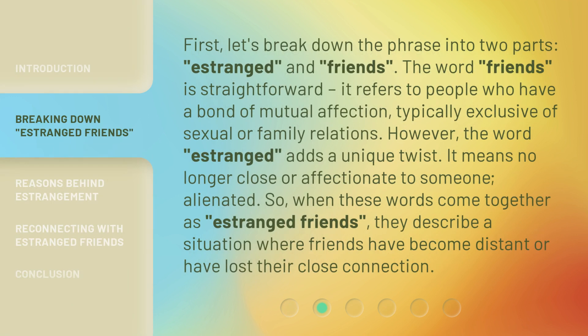First, let's break down the phrase into two parts: estranged and friends. The word friends is straightforward — it refers to people who have a bond of mutual affection, typically exclusive of sexual or family relations. However, the word estranged adds a unique twist. It means no longer close or affectionate to someone; alienated. So when these words come together as estranged friends, they describe a situation where friends have become distant or have lost their close connection.